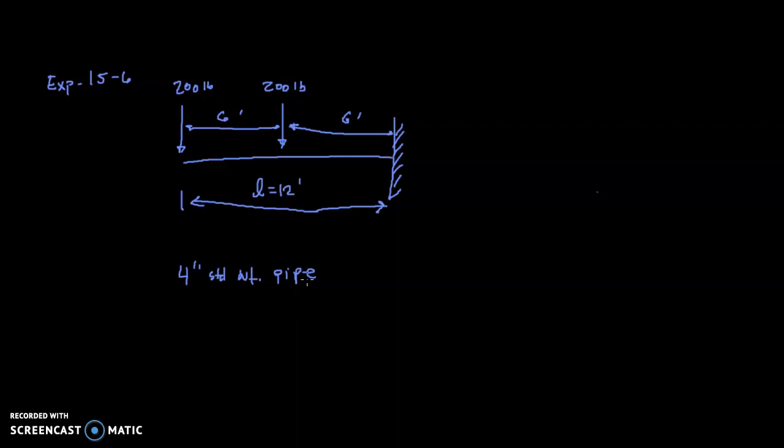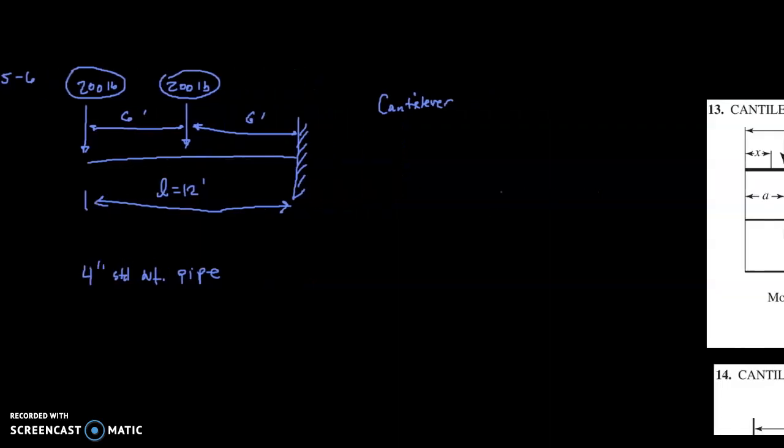So why are we looking at this example? What makes this unique or challenging? Well it's the fact that if I try to go to Appendix H and find a situation that has a cantilevered beam with two loads, with one load at the mid span and another at the end, I'm not going to find that situation. I'm not going to find one single formula that's going to tell me the overall deflection. So what do I do?